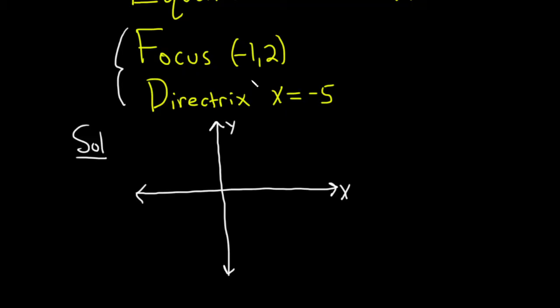Let's go ahead and plot what we have. So the focus is negative 1 comma 2. From the origin we'll go left 1 and up 2 and put a dot.